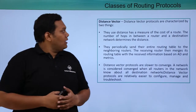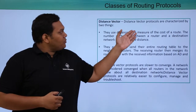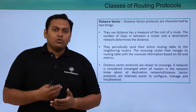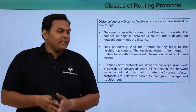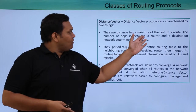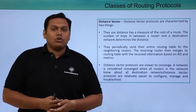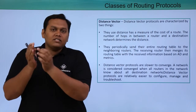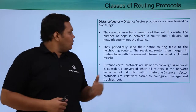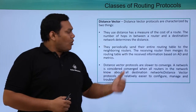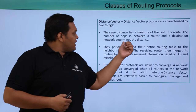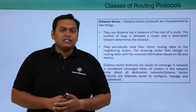A distance vector protocol can be categorized in two things. The first is that it uses distance as a measure of the cost of a route. The cost of a route is measured in the form of distance, and the number of hops between the router and the destination network determines that distance.